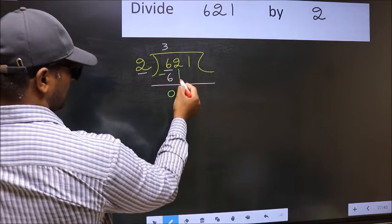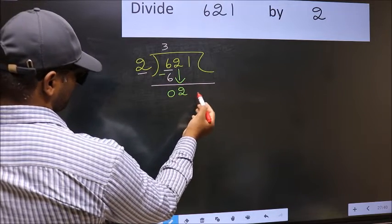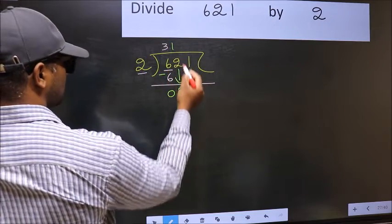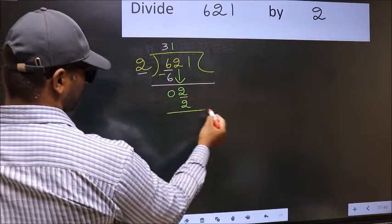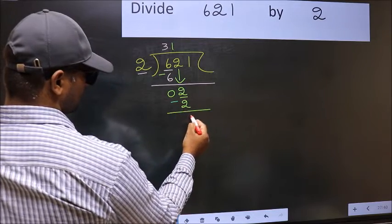After this step, bring down the beside number. So 2 down. Now 2. When do we get 2 in 2 table? 2 ones, 2. Now you should subtract. 2 minus 2, 0.